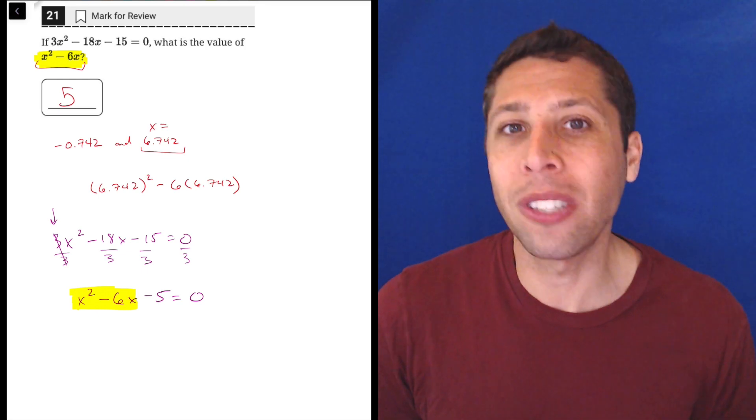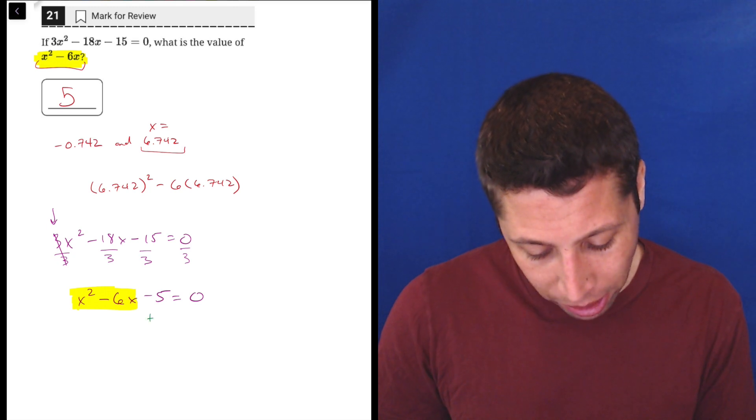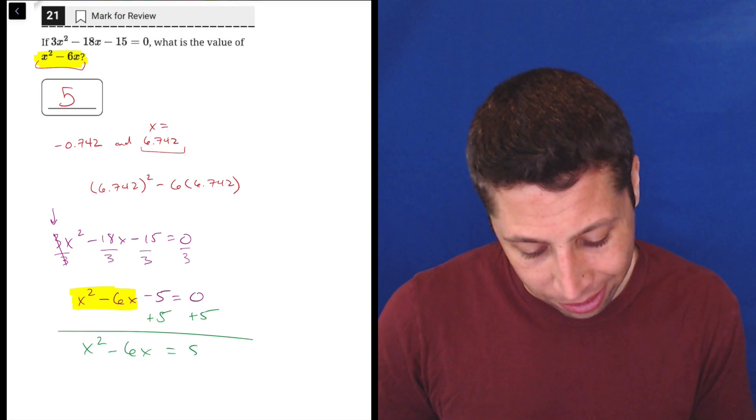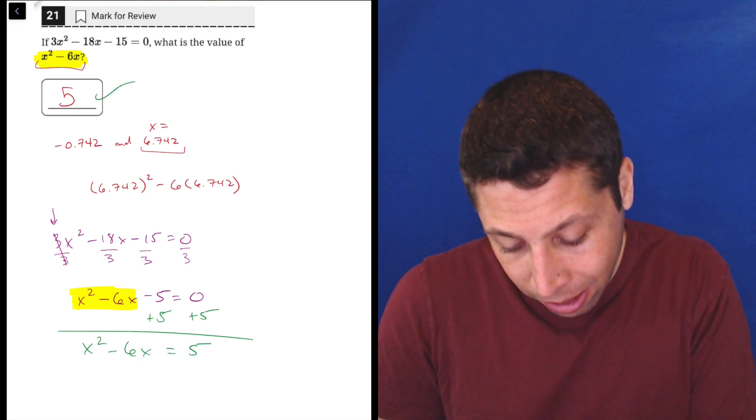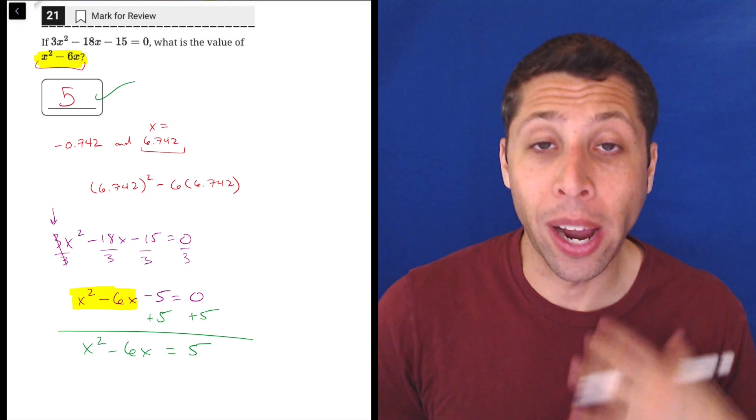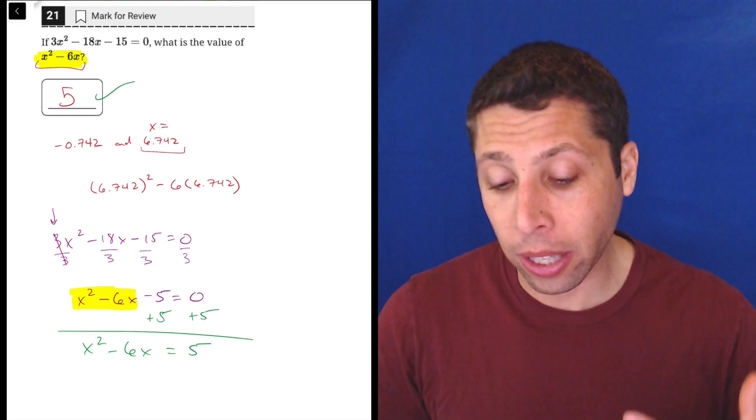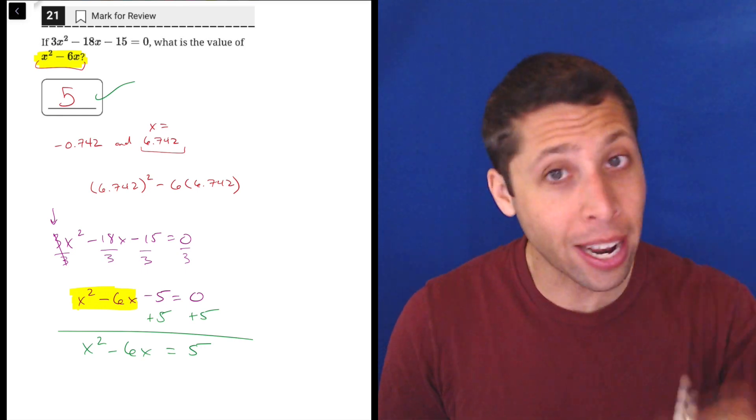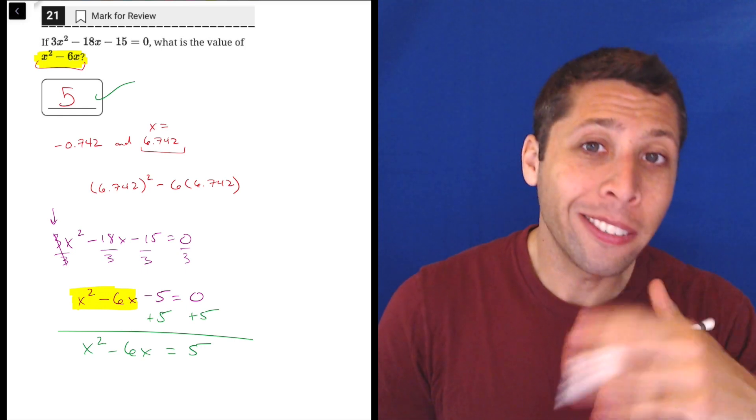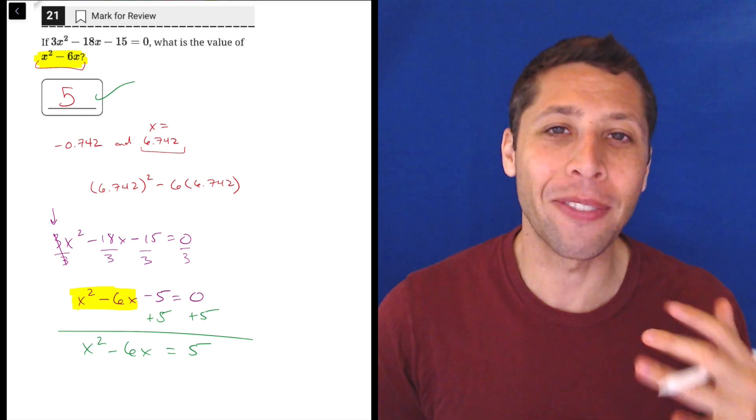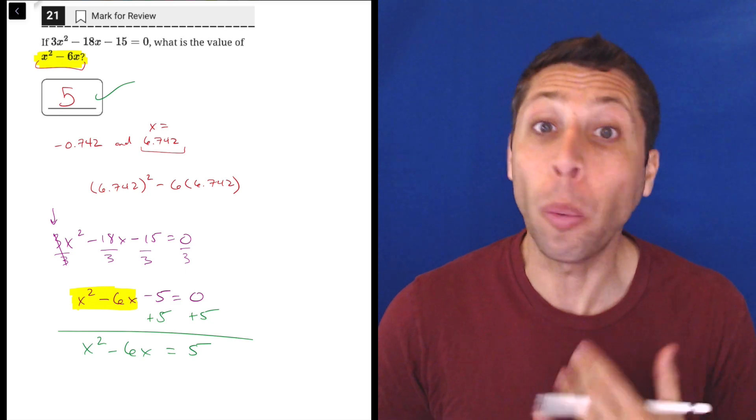This is something I talked about in one of the first questions: I said we don't always need to solve for x, pay attention to what they want. In this case if we want x² - 6x, just add 5 to both sides. Then what are we left with on the left? x² - 6x = 5, and there you go, that's exactly what we wanted. That takes a lot of confidence in algebra though, right? Because when we're first learning algebra our teachers are drilling into us again and again: you got to solve for x, get x alone, get x by itself.